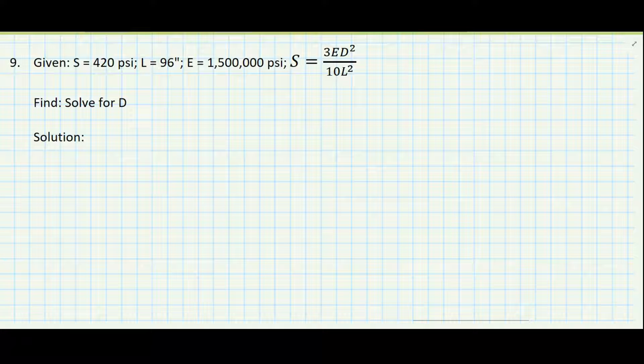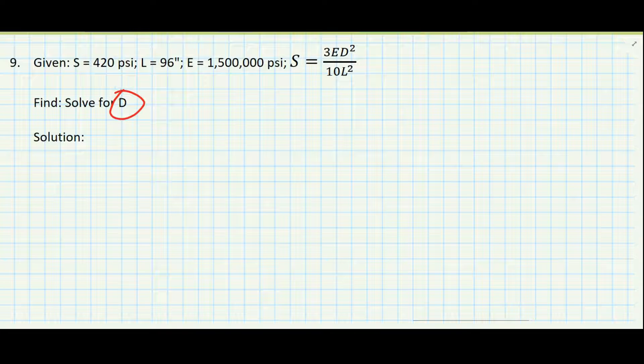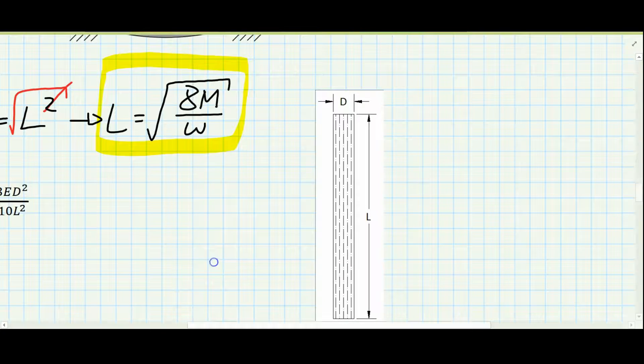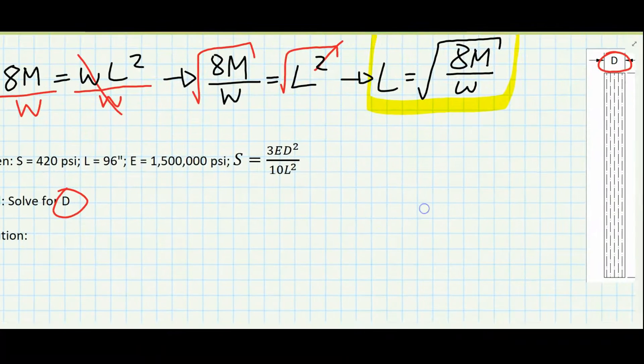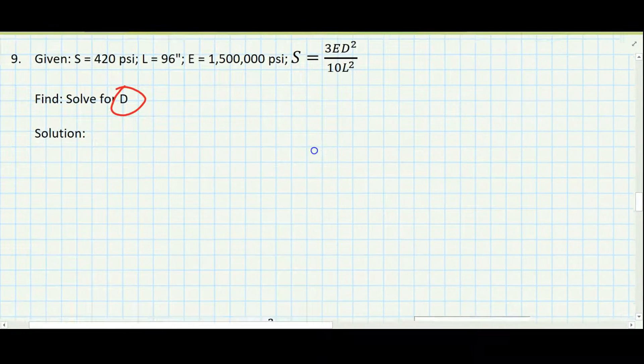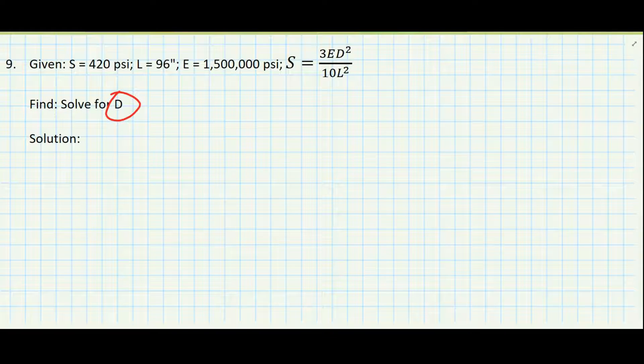Our applied algebra problem number nine, we are looking for D which is the dimension of a post which we can see right here. This dimension of a post is probably cylindrical, a cylindrical column to hold up some portion of a building. We're solving for a numerical answer. We need to separate D from this equation here.